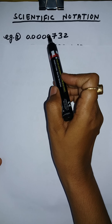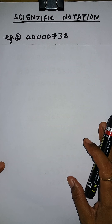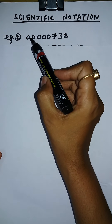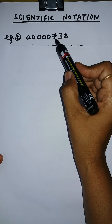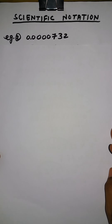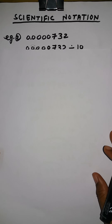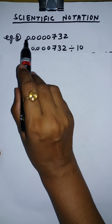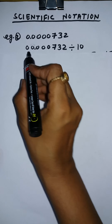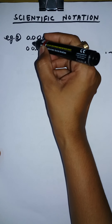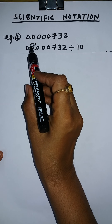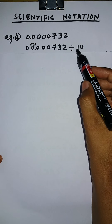Example 2: 0.0000732. This is a very very small number and we have to represent it in scientific notation. How do we shift this decimal so that we get a, which is a terminating decimal having a value between 1 and 10? If this decimal shifts to the right side — as the decimal was here and we are shifting it to the right side — to compensate the shifting of this decimal from left to right, we have to divide this number by 10.